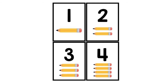Okay, KG1. Let's count together. How many pencils do we have in each picture? Number four. First, let's count. One pencil. Next. One, two. Next. Two pencils. Next. One, two, three.